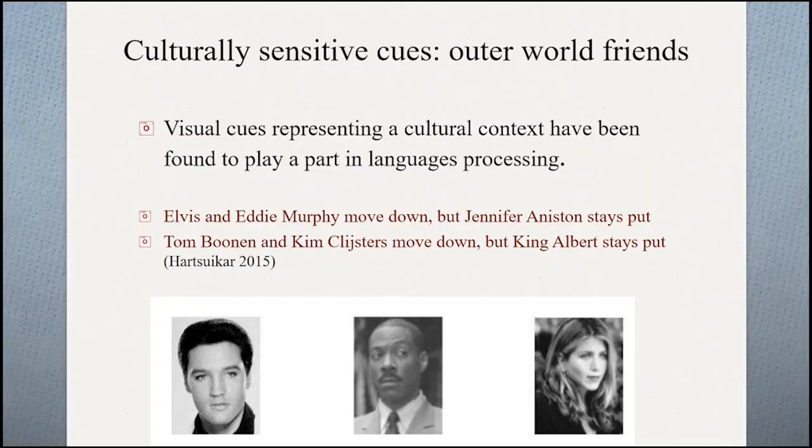Now let's look at the outside friend — the cultural and social context. Visual representations depicting a particular cultural context can interfere with language processing even when that cue has no role to play in the task. In one well-known study, researchers used series of pictures representing particular cultures. Pictures of Elvis, Eddie Murphy, and Jennifer Aniston represented American culture; pictures of Tom Boonen, Kim Clijsters, and King Albert represented Dutch culture, and so on.